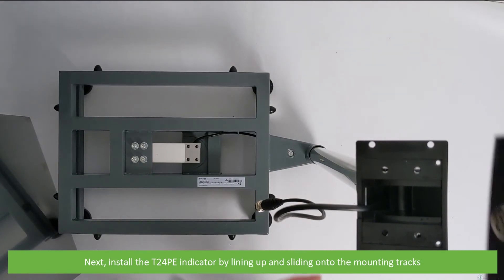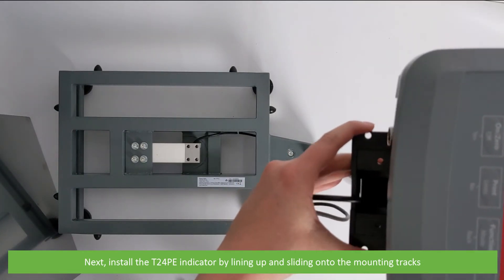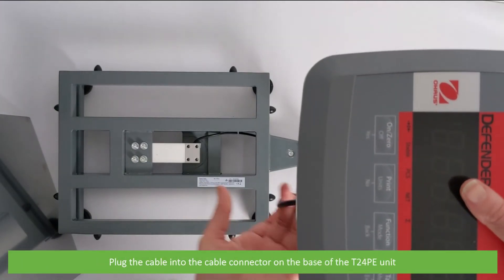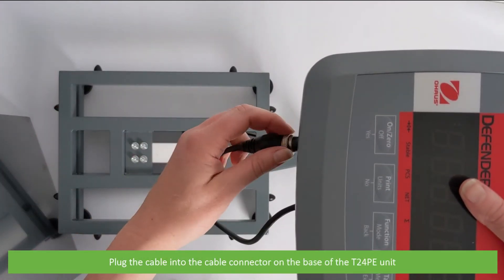Next, install the T24PE indicator by lining up and sliding onto the mounting tracks. Plug the cable into the cable connector on the base of the T24PE unit.